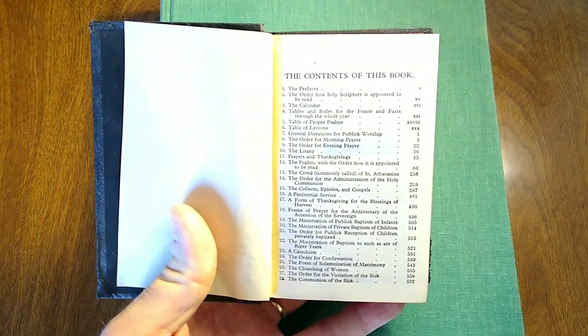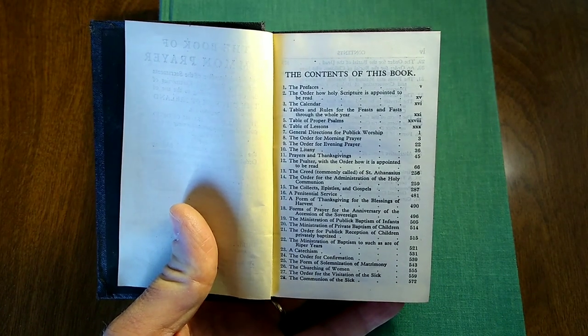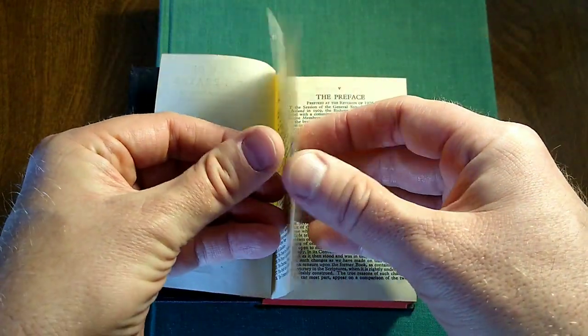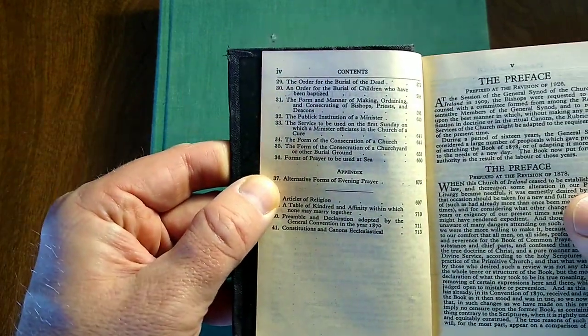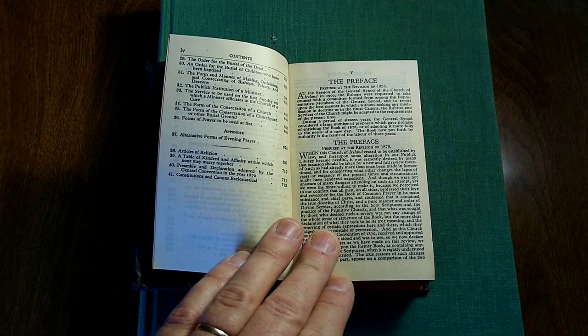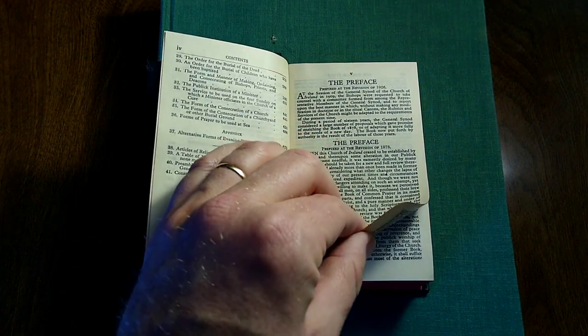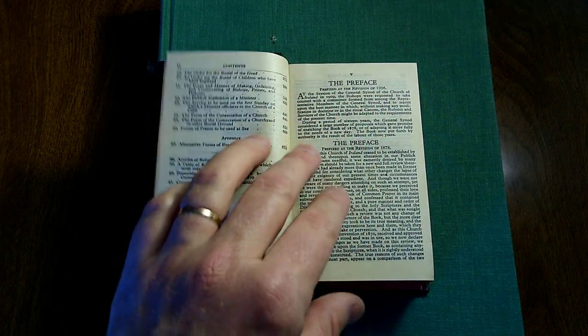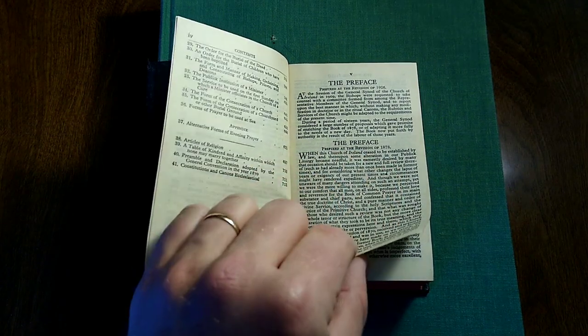Looking at the table of contents, which I will pause there for any that want to look at that. We have a separate preface for the Irish prayer book prefixed at the revision of 1926, prefixed at the revision of 1878.